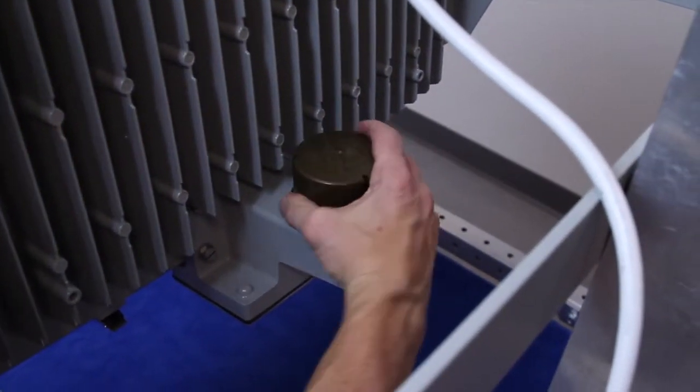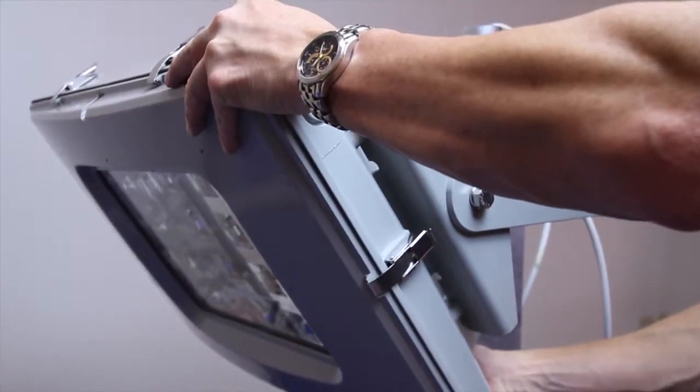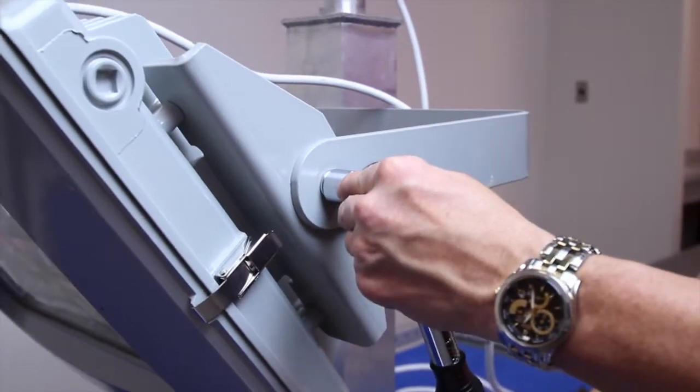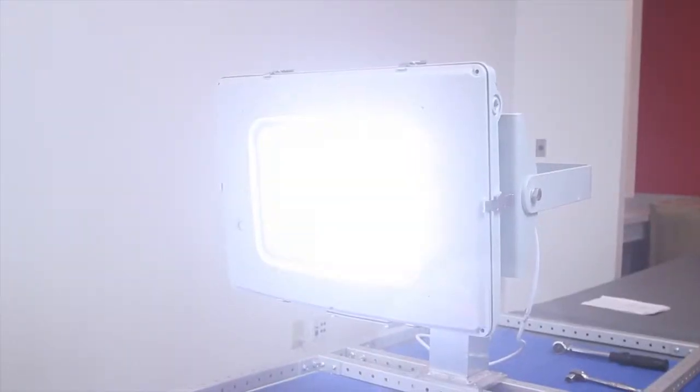Attach the photo cell. Adjust the fixture to the desired angle and torque the aiming adjustment bolts. Now you're ready to energize your fixture.